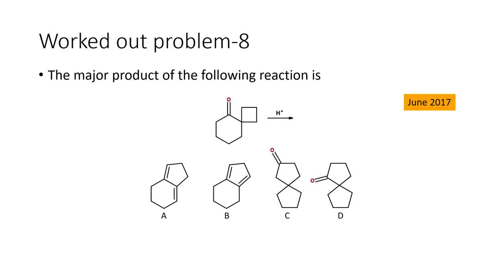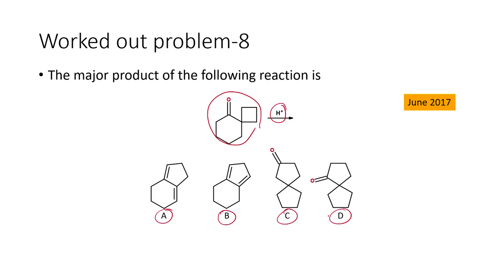Let us move on to the next one. In this case, what we are going to see is the major product of the following reaction. We have a bicyclic system with a carbonyl compound. This in presence of an acid gives some product, so we have options A, B, C and D. What is the product that will be formed when this particular ketone is subjected to acidic conditions?